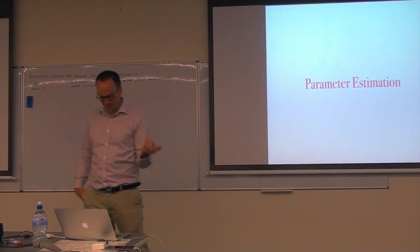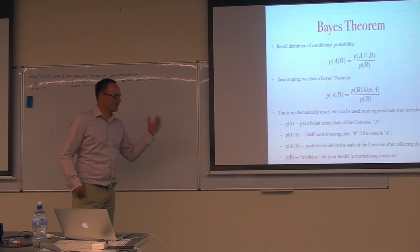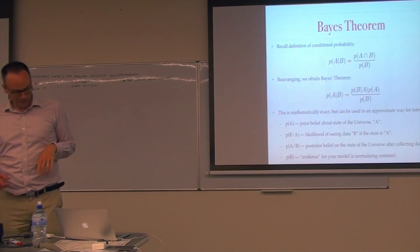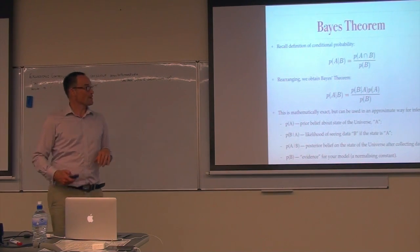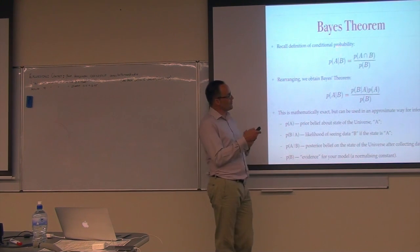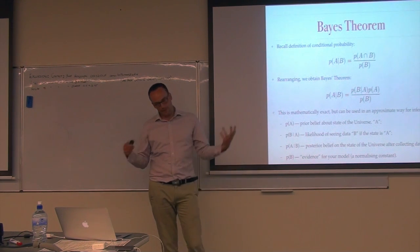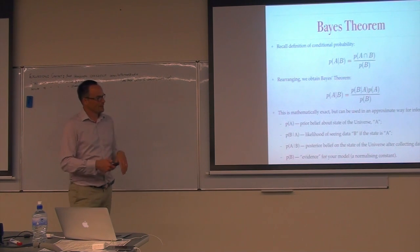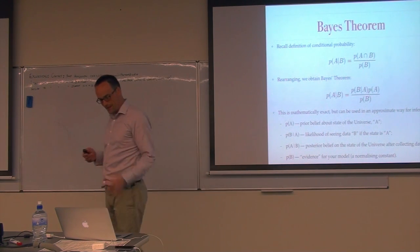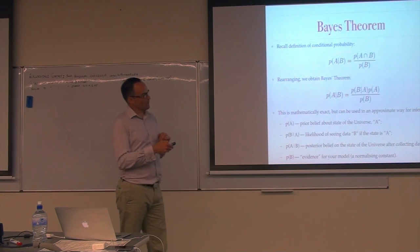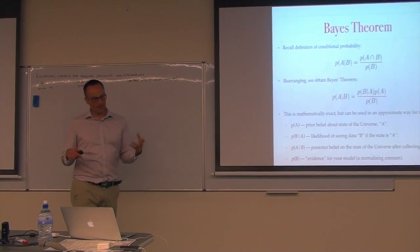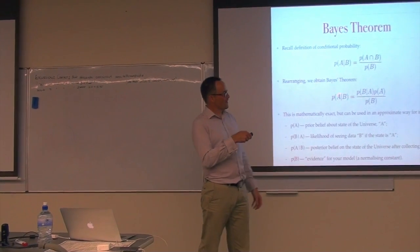These methods are mostly Bayesian and based on Bayes' theorem. Alessandro mentioned Bayes' theorem at some point in one of our lectures, but just a quick recap. Bayes' theorem is basically a relationship between probability distributions based on the definition of conditional probability — the probability that something happens given that something else is already known to have happened. If you rearrange this, you get Bayes' theorem: P(A|B) = P(B|A) × P(A) / P(B). There's nothing deep here; it's just using this relationship twice.